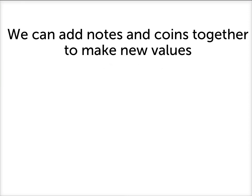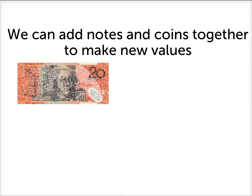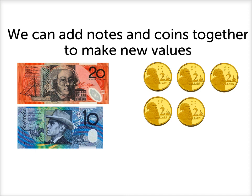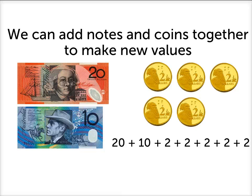We can also add notes and coins together to make new values of money. For example, let's say I had a $20 note, a $10 note, and five $2 coins. How much money do I have? To work that out we can add all those numbers together: 20 plus 10 plus 2 plus 2 plus 2 plus 2 plus 2. Counting up: 20 plus 10 is 30, plus 2 is 32, plus another 2 is 34, plus another 2 is 36, plus another 2 is 38, plus another 2 gives us a total of $40.